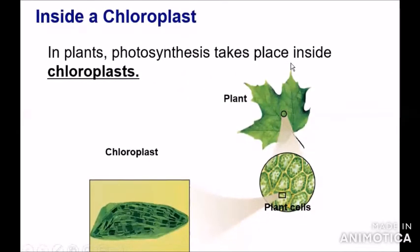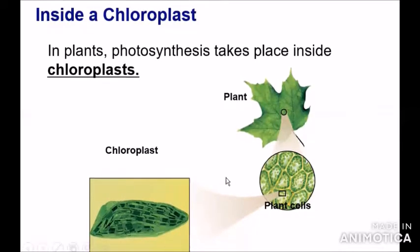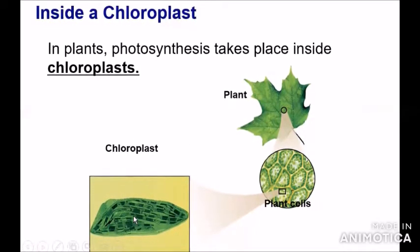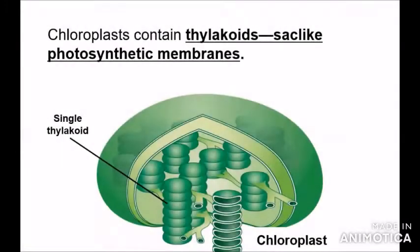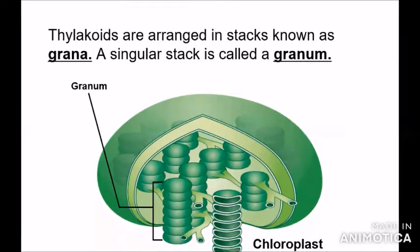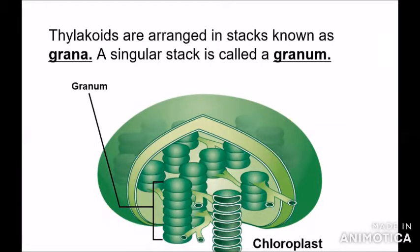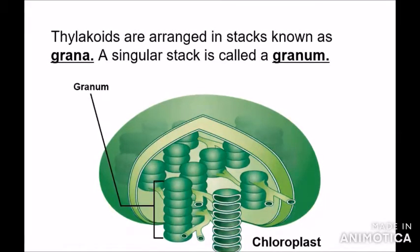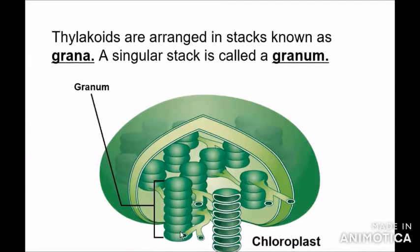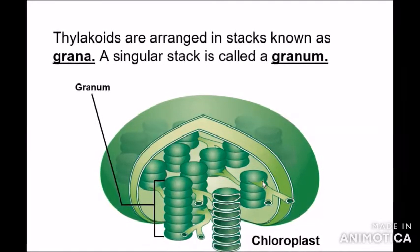Inside the chloroplasts there are a lot of enzymes that have a major role in the Calvin cycle. Thylakoids are stack-like photosynthetic membranes arranged in stacks known as grana. A singular stack is called a granum.